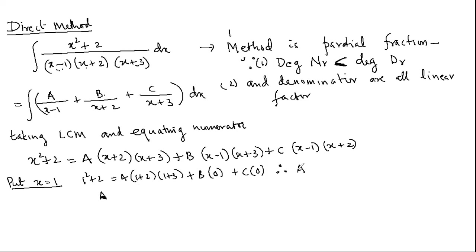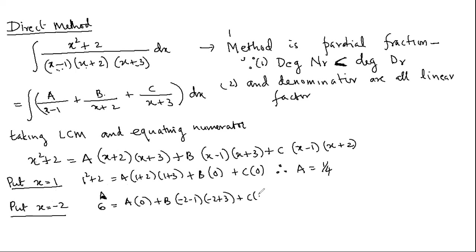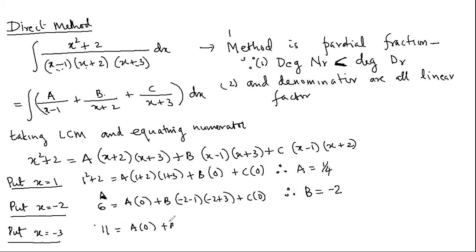Put x = −2: 4 + 2 = 6; B(−2−1)(−2+3) = B(−3)(1) = −3B; so 6 = −3B, giving B = −2. Put x = −3: 9 + 2 = 11; C(−3−1)(−3+2) = C(−4)(−1) = 4C; so 11 = 4C, giving C = 11/4.